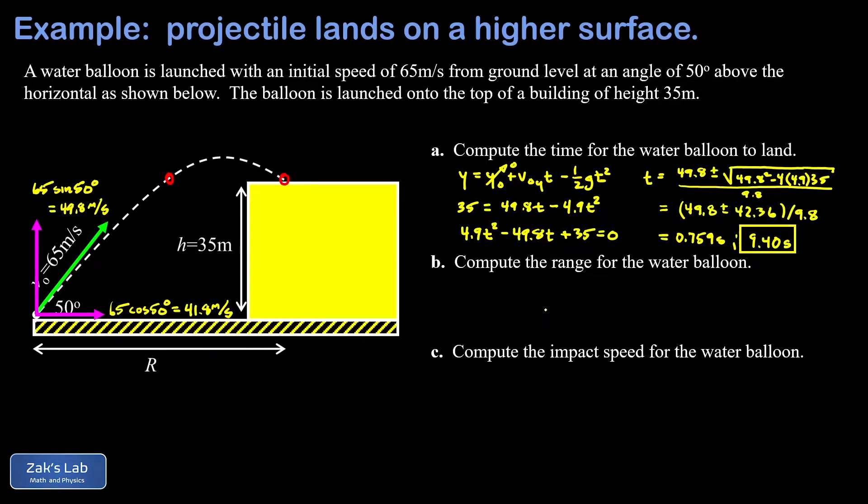In part B, we want the range for this flight. This is actually the simplest part of the problem because the horizontal motion is so simple for projectile motion. There is no x acceleration. So we write x equals x naught plus v naught x, that's the initial x velocity times the flight time. Once you have the flight time, this is really quick. My initial position is zero. So all I have to do is take my initial x velocity, that was 41.8 meters per second, and multiply by the time this thing has been flying, that's 9.40 seconds. In other words, this is just distance equals rate times time. When I run the numbers on this to three significant digits, I get 393 meters.